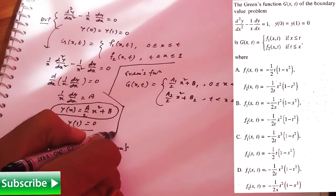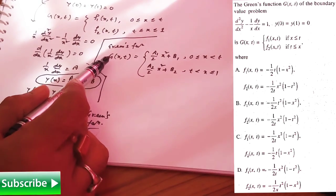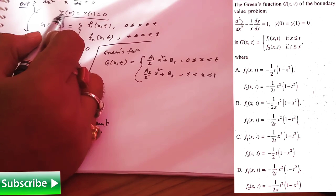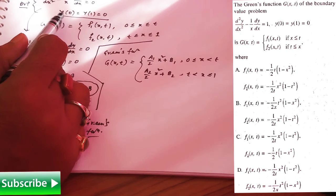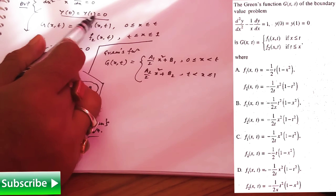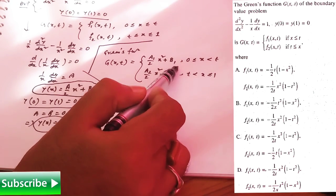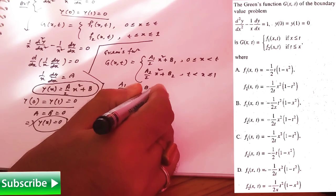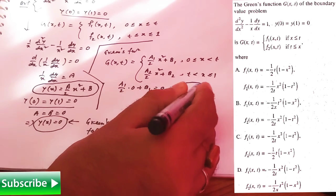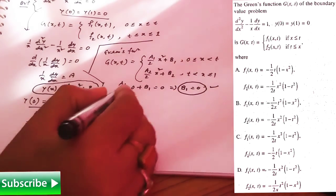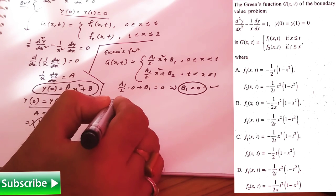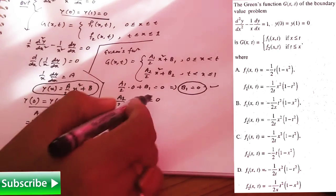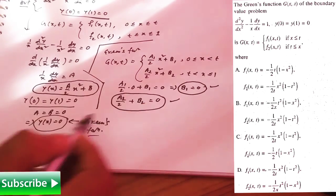Use all the properties of Green's function. Green's function satisfies the given boundary conditions: y(0) = 0 and y(1) = 0. At x = 0, the first piece gives (a1/2)·0 + b1 = 0, so b1 = 0. At x = 1, we get (a2/2)·1 + b2 = 0, giving the relation a2/2 + b2 = 0.